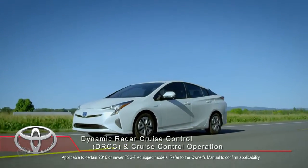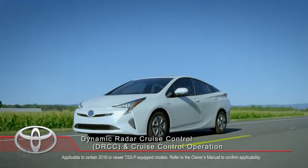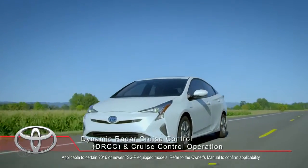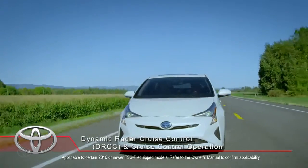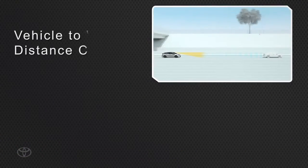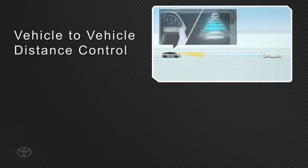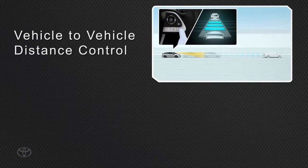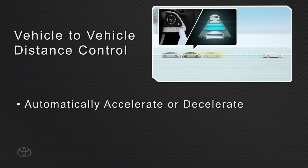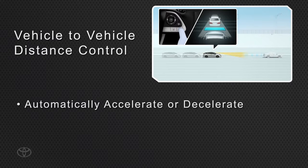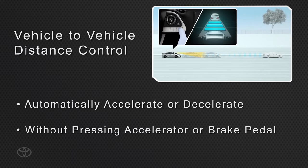The Dynamic Radar Cruise Control System supplements conventional cruise control with vehicle-to-vehicle distance control. It allows the vehicle to automatically accelerate or decelerate in order to help maintain a set following distance from a vehicle traveling directly ahead, without pressing on the accelerator or brake pedal.